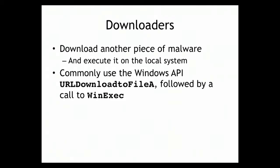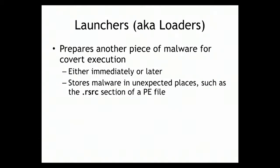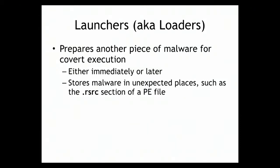If you're using the Windows API, you'll use an API call like URLDownloadToFile and then WinExec to run the file. There are also launchers - something that gets malware on the machine and runs it - because you may not want to do something as direct as downloading an .exe file and running it directly, because that might hit the antivirus.